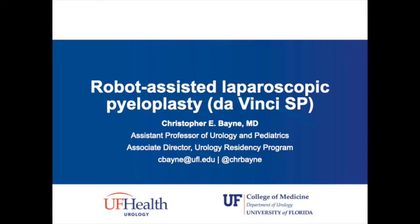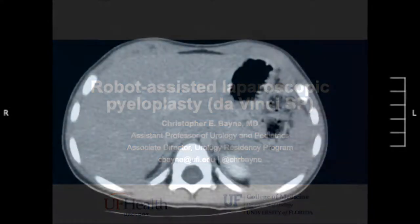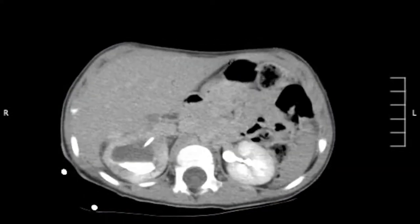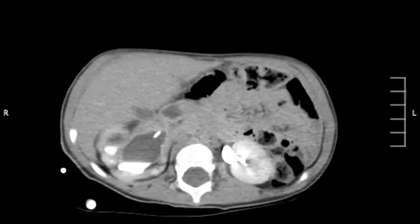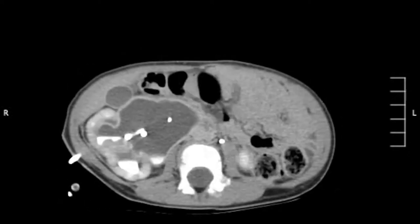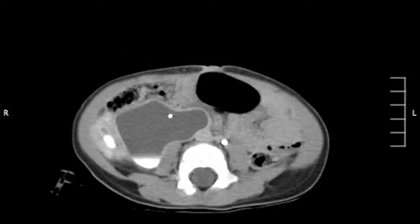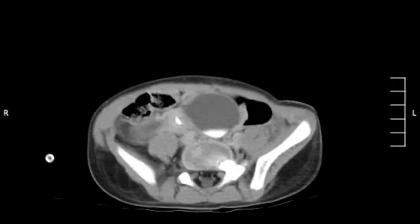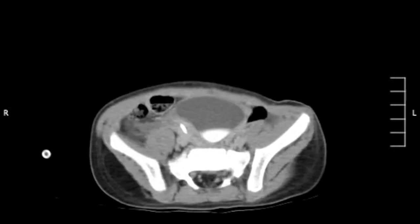This is a child who presented to us after traumatic laceration of the right ureteral pelvic junction, and he had had a ureteral stent in for a very, very long time. This is a CT scan showing the right-sided severely hydronephrotic kidney and proximal ureter just at the point of the laceration.